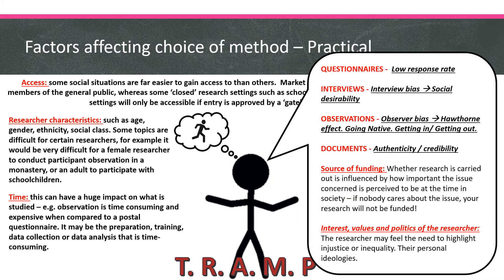In addition to TRAMP, there are some extras. Questionnaires have a low response rate as a practical problem. Interviewers will have interviewer bias that leads to social desirability. Observations have observer bias, which relates to the Hawthorne effect. You also have issues like going native, getting in, getting out, and with documents there is authenticity and credibility — practical issues specific to certain types of research method.